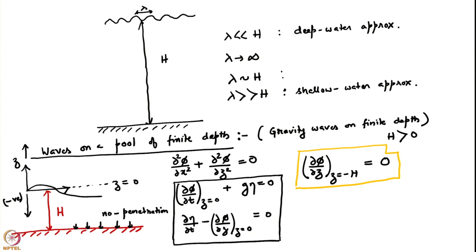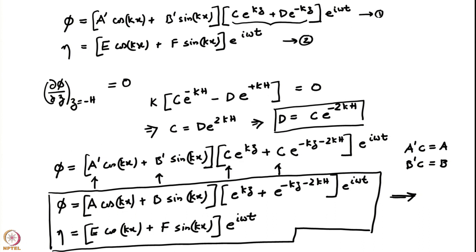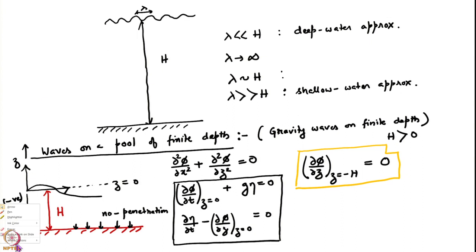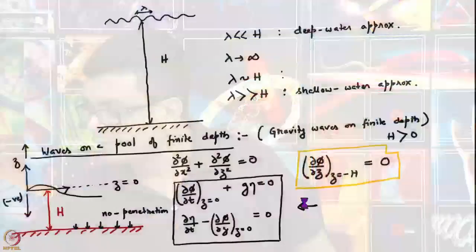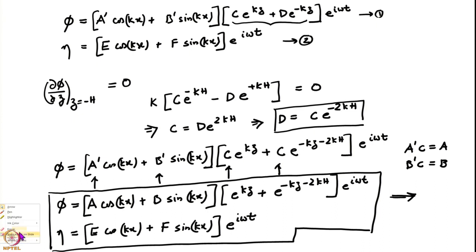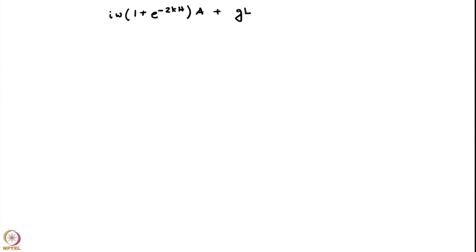The equations obtained are: iω(1 + e^(−2kh))A + gE = 0 (from Bernoulli), and iωE − kA(1 − e^(−2kh)) = 0 (from the kinematic condition), with analogous equations for B and F. You can verify these by taking the limit h → ∞: the exponential terms drop out and you recover the deep water surface gravity wave equations.